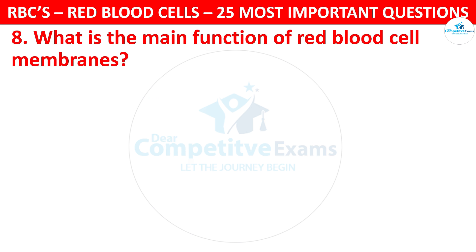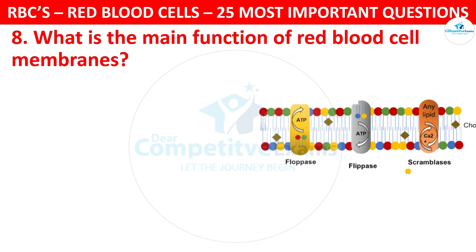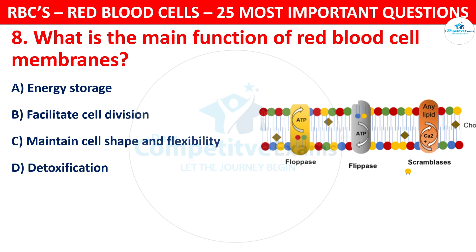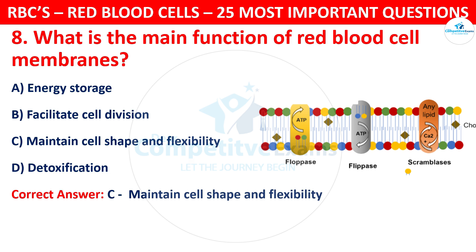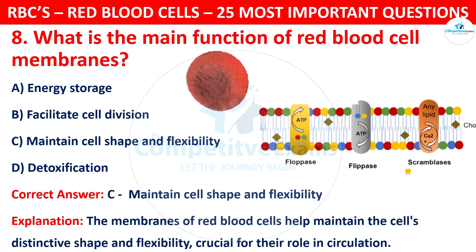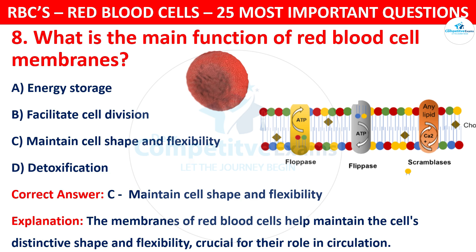Question 8. What is the main function of red blood cell membranes? Your options are: Energy Storage, Facilitate Cell Division, Maintain Cell Shape and Flexibility, or Detoxification. The correct answer is C, that is Maintain Cell Shape and Flexibility. The membranes of red blood cells help to maintain the cell's distinctive shape and flexibility, crucial for their role in circulation.